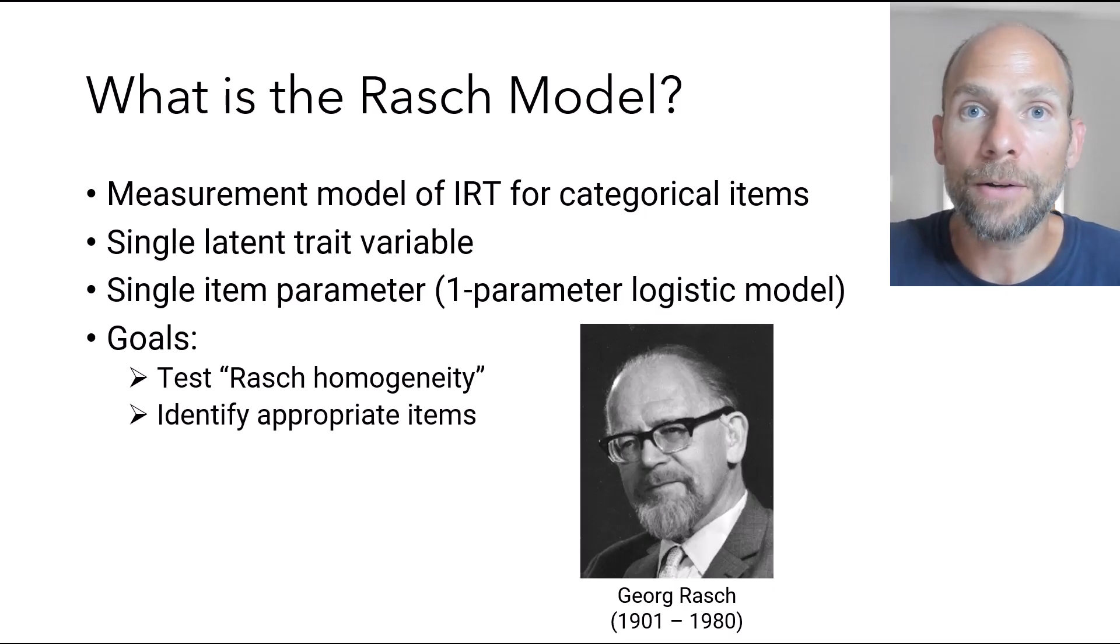Also, part of the process often is to identify appropriate and inappropriate items, meaning finding the items that are Rasch homogeneous versus the items that may not be Rasch homogeneous. So item selection is part of the procedure. And there are item fit statistics that are part of a Rasch analysis that can help in identifying appropriate versus less appropriate items for a Rasch scale.